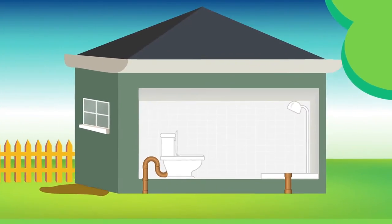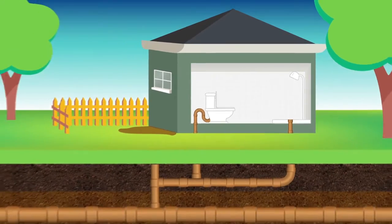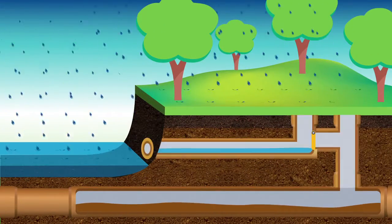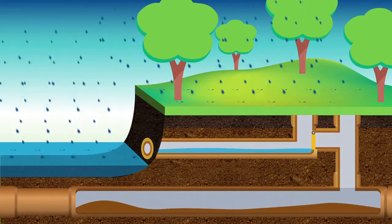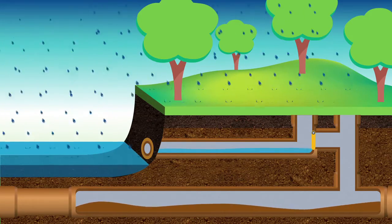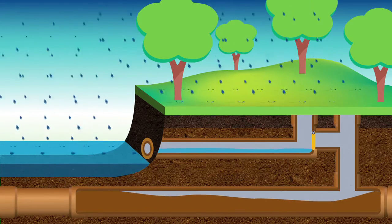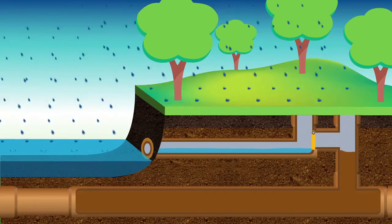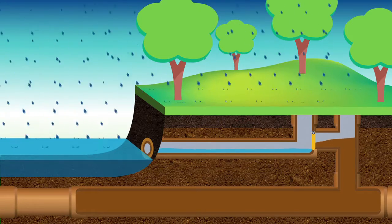And instead of backing up into people's gardens or homes, the system is designed to overflow into local rivers or creeks through emergency relief structures. These are outlets within the sewage system that overflow when the system exceeds its capacity. It's important to note that the overflow that spills into rivers and creeks is heavily diluted.